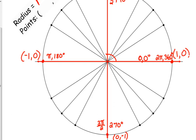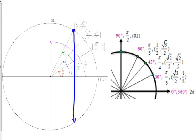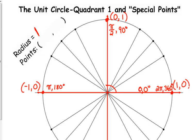Now let's look at the first quadrant — this is all based on the special angles. That first line represents an angle of 30 degrees or pi over 6. The second line from the positive x-axis is a 45-degree angle or pi over 4. And the third one from the positive x-axis is a 60-degree angle or pi over 3.